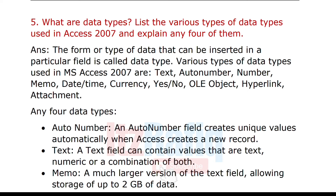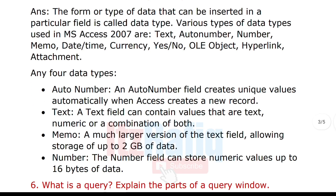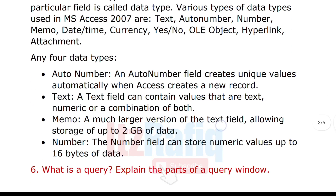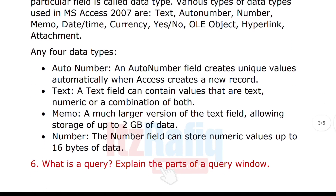Auto number, text, memo, number — these are the main data types. Note that text and memo are different: text is for short text and memo is for lengthy text.